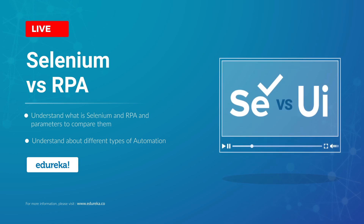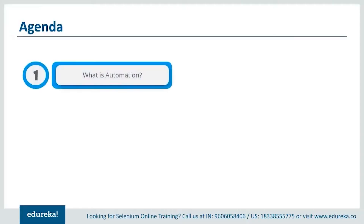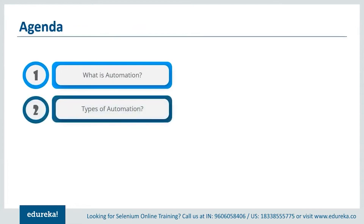Let's take a look at the agenda for this session. First, let's start by understanding what automation is and take a real-time example that demonstrates its advantages. Then we'll discuss the different types of automation that exist, and after that I'll give you a brief introduction to the different forms of automation — that is, automation testing and business process automation — which are the major fields where one can build a career.